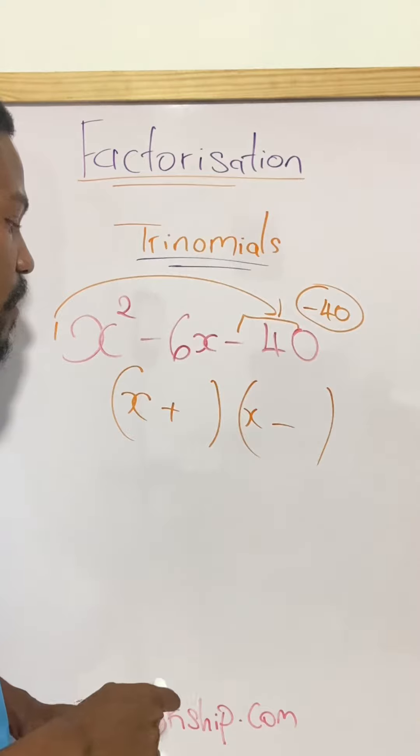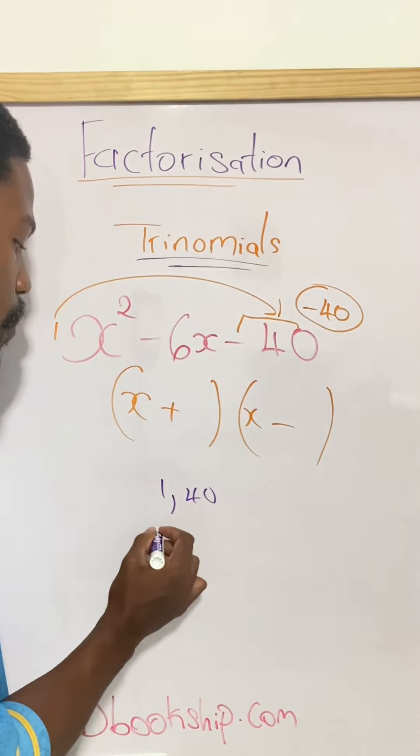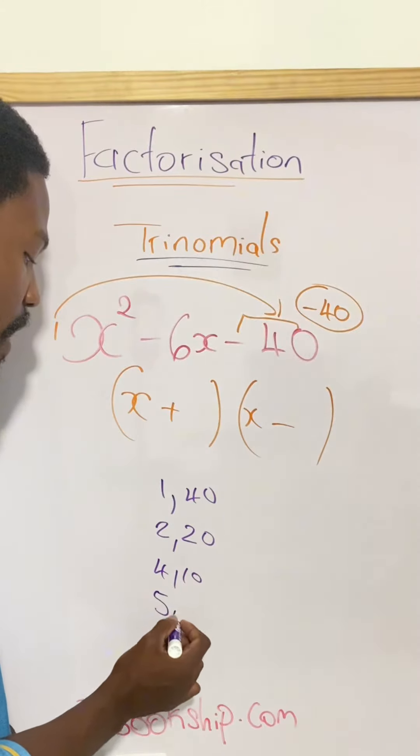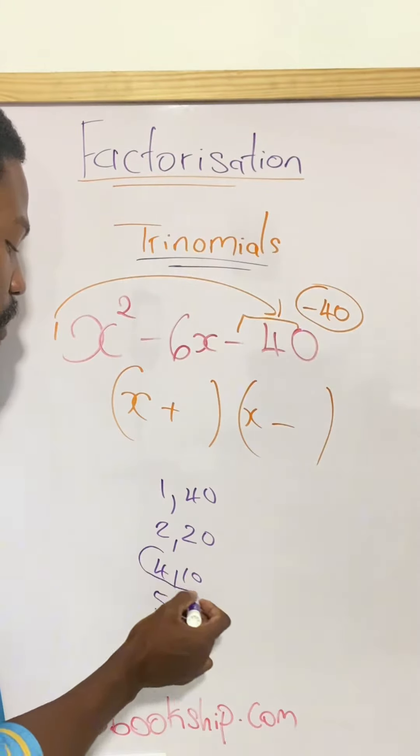So listing out the factors of 40, we know we have 1 and 40, we have 2 and 20, we have 4 and 10, and we also have 5 and 8. In this case, the pair that we're going to use is 4 and 10.